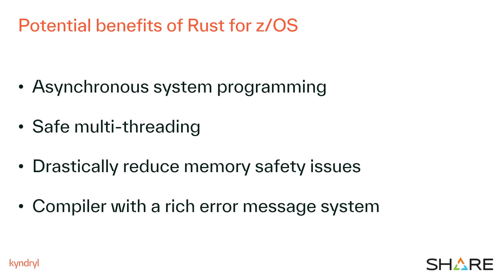If Rust is ever ported to ZOS, there are several potential benefits. Some of them are: asynchronous system programming, potentially enabling more ZIP offloads through the usage of preemptible service request blocks; safe multi-threading; drastically reducing memory safety issues; and a compiler with a rich error message system that will catch critical problems at compilation time, providing insightful messages to developers so they can fix problems early in the development stages.